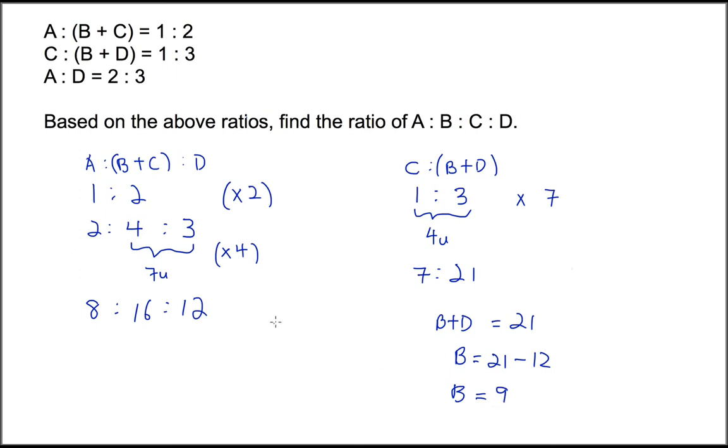Then since we know that B equals 9, we have B plus C equals 16. So C will be 16 minus 9 which is 7. Then we have B and C.